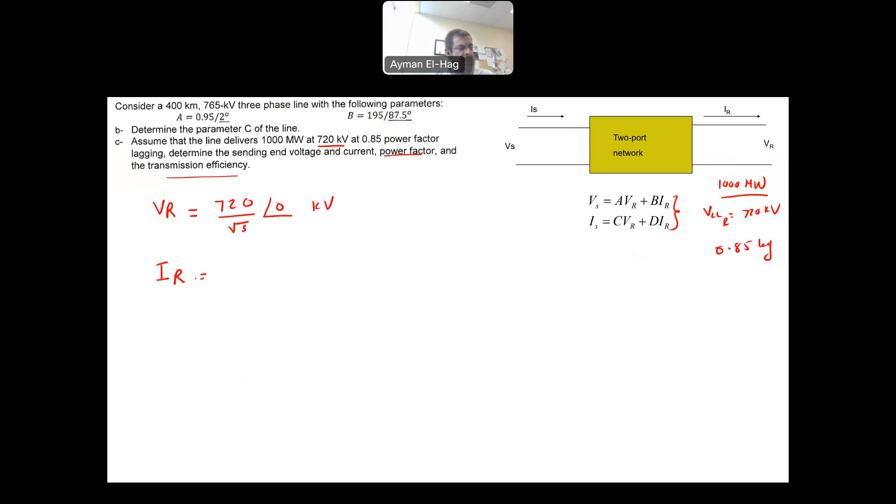Your IR, we know that this is 1000 times 10 to power 6. This is the power divided by root 3. The voltage line to line 720 times 10 to power 3 times the power factor, which is 0.85. It's very important to have the power in watts and the voltage in volts. So it was in megawatts, multiplied by 10 to power 6. This is kilovolts multiplied by 10 to power 3 to avoid any mismatch in the units. Now the angle is, this is a lagging power factor, so it is minus cosine inverse of 0.85. When we do the calculation, this is 943.4 angle of minus 31.8 amps. So that is your VR. This is your IR.